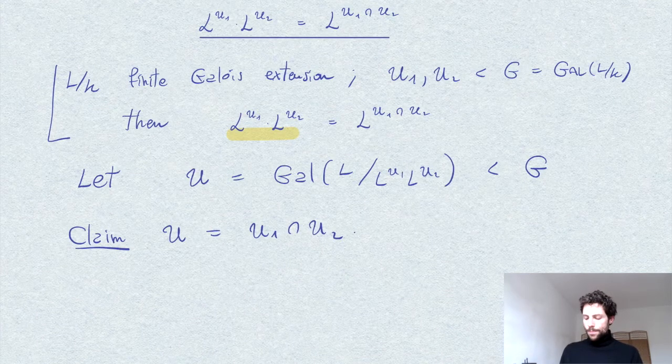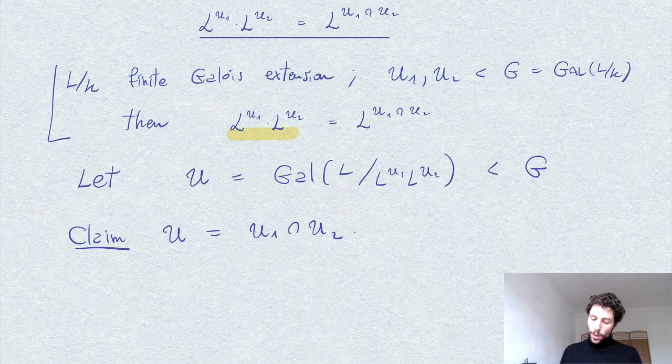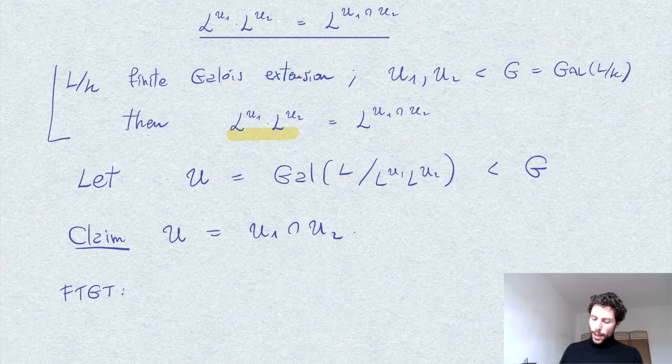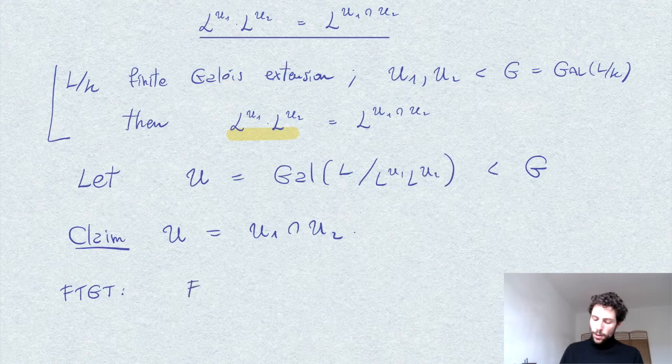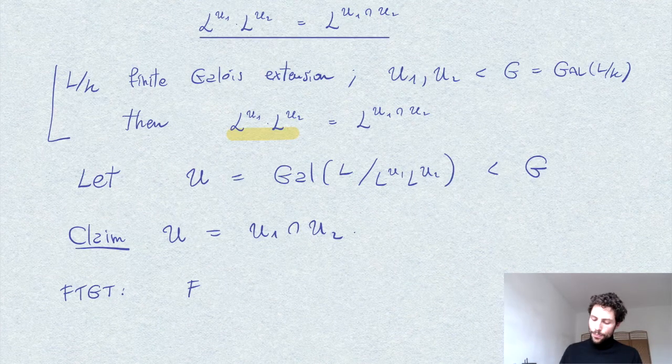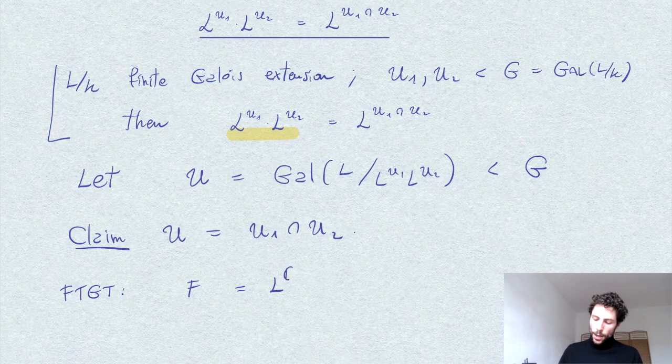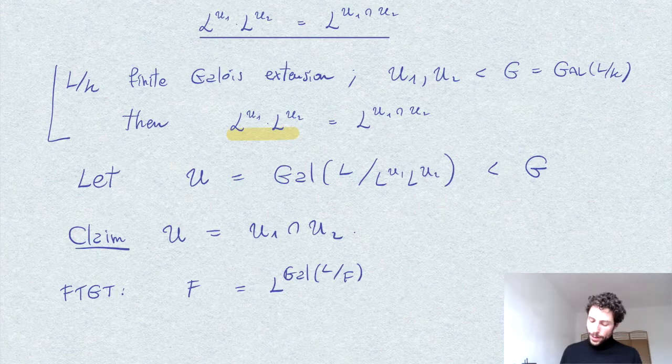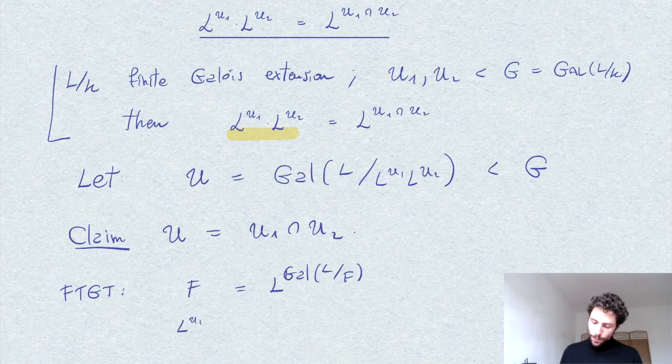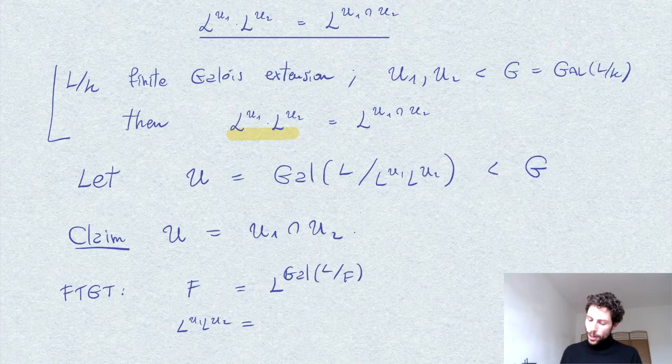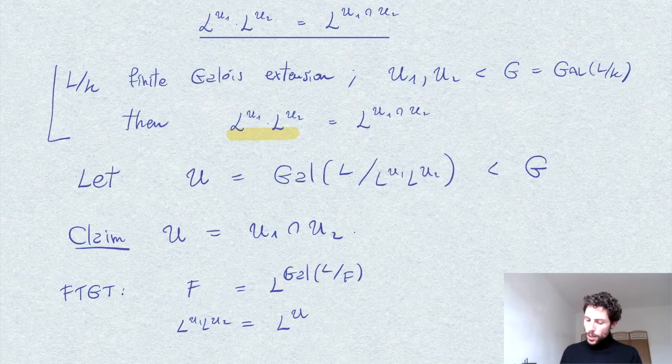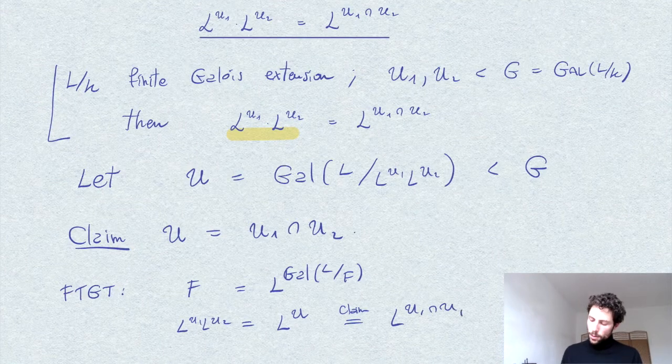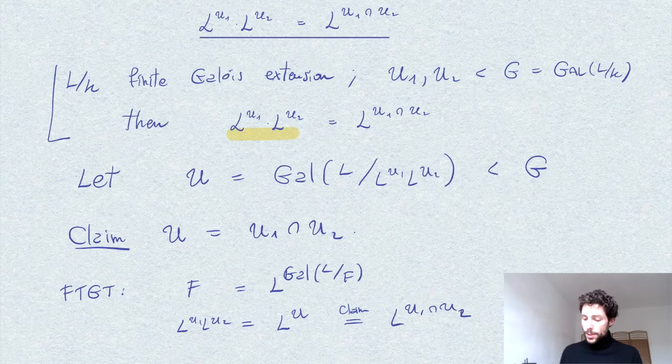This I'm going to show in a moment, but once we have this, let's assume it for a second. So we have a Galois extension, we can apply the fundamental theorem of Galois theory. This says that any intermediate field F between L and K is equal to the fixed field of the Galois group. Applying this to the product of L^U1 and L^U2, we have the Galois group is what we defined as U. Assuming the claim, this is precisely L to the U1 intersected U2, which is our statement.